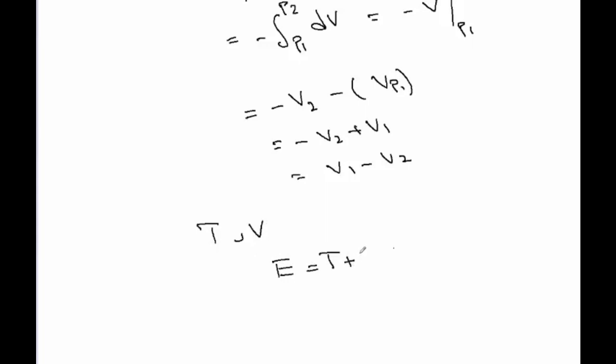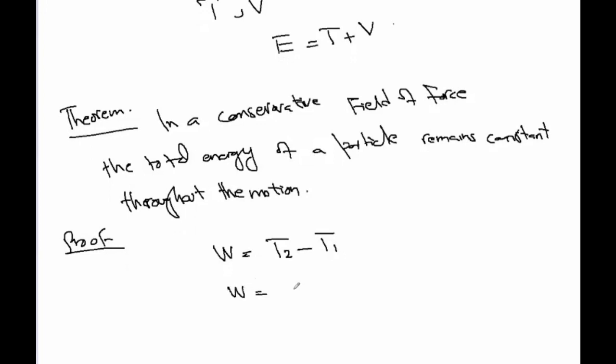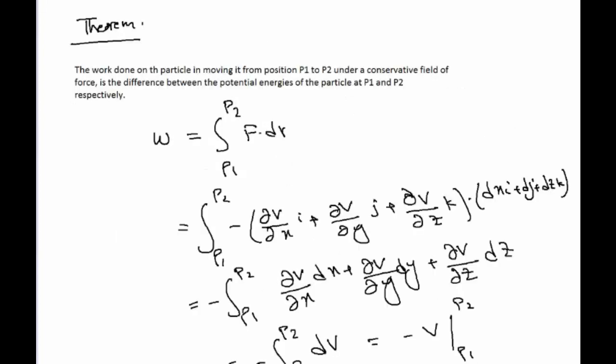We have another result: if tau (T) is the kinetic energy of the particle moving under the influence of a conservative field of force, and v is the potential energy, then the total energy is T plus V. So the total energy is the sum of kinetic energy and potential energy. In a conservative field of force, the total energy of a particle remains constant throughout the motion. From our previous theorem, the work done equals the difference of potential energy.